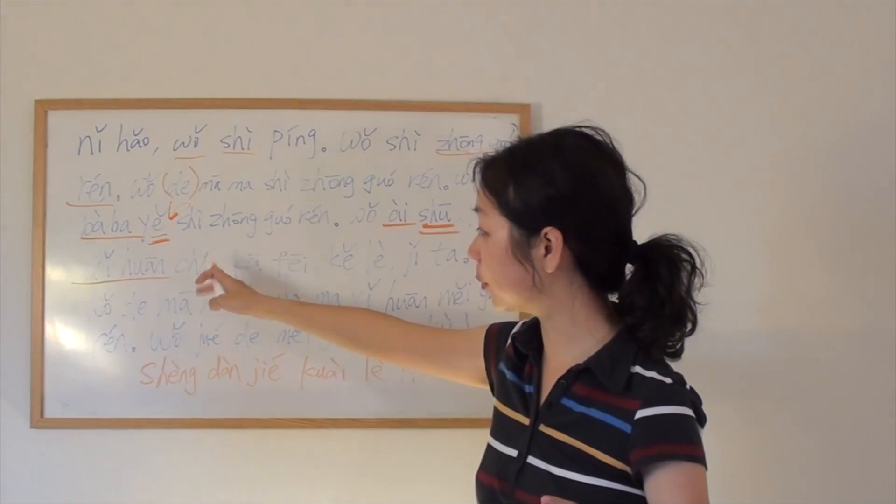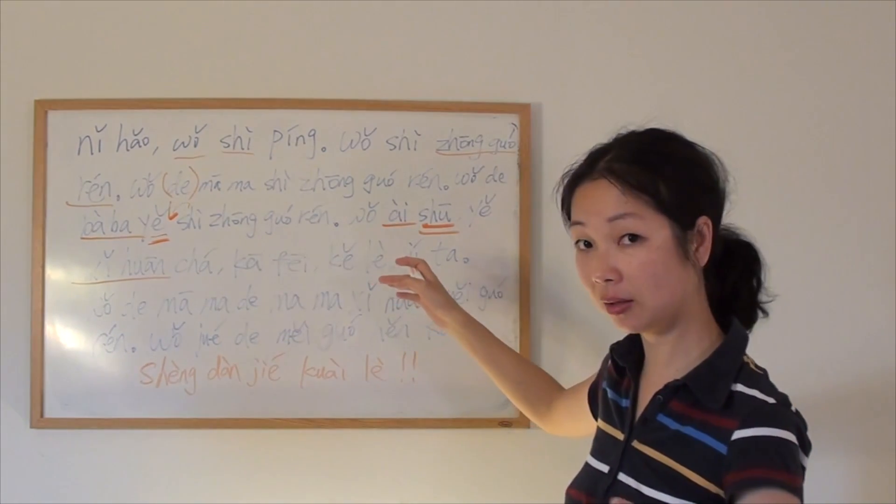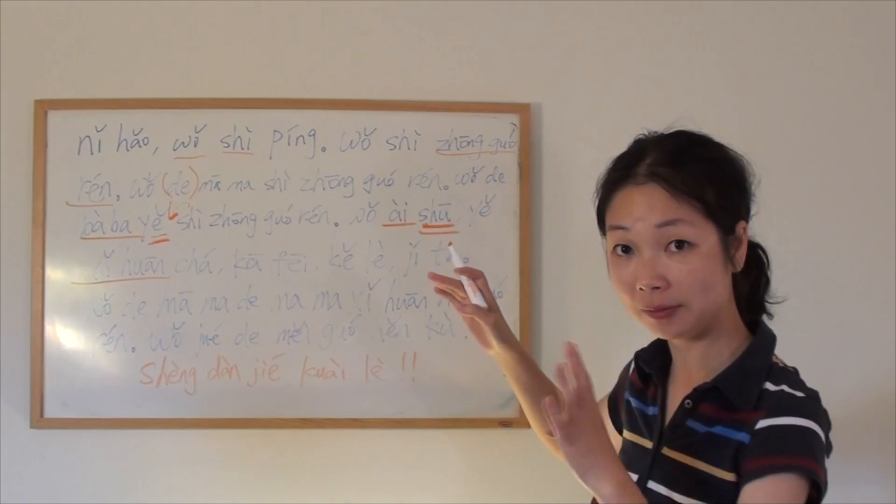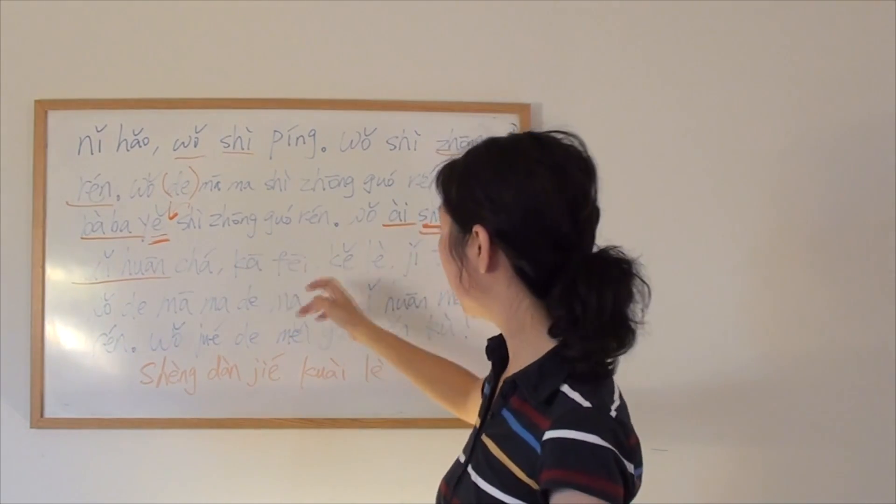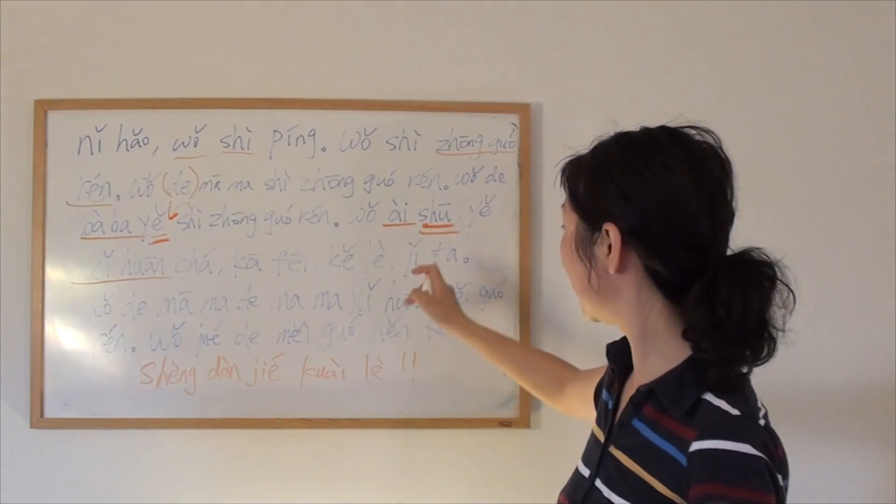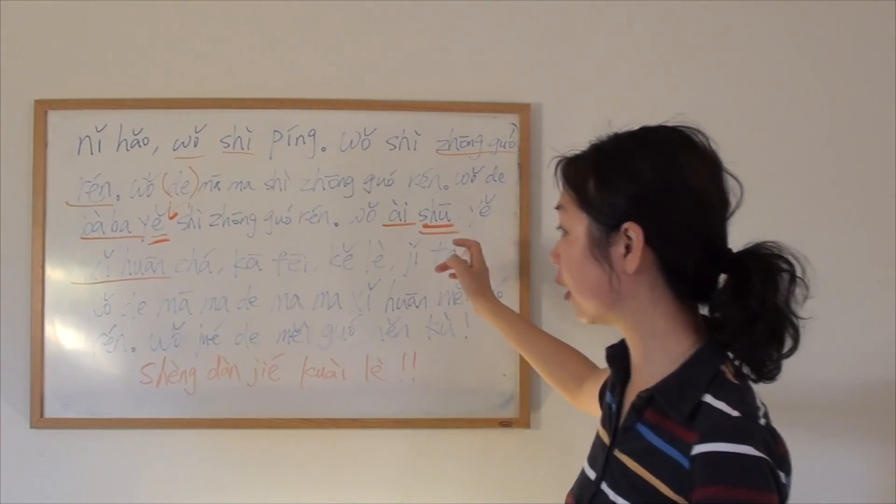We learned this in last episode. They are all from English. You can tell the pronunciation. It's not Chinese. It's from English pronunciation. 茶, Miss tea, 咖啡, coffee, 可乐, Coke, 吉他, guitar.